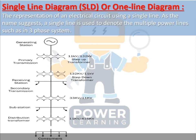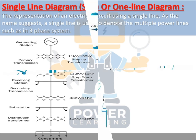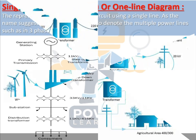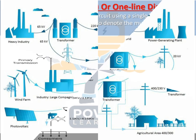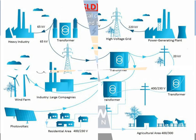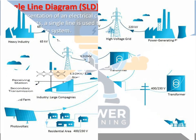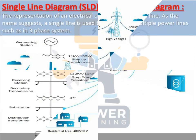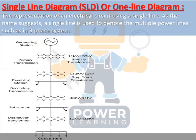With the help of a single line diagram, you can show the entire system on a single page. In real life, a transmission system involves very large drawings, but with an SLD you can explain it to anyone very easily. If you are an estimation engineer, you need to know single line diagrams well before starting a project.